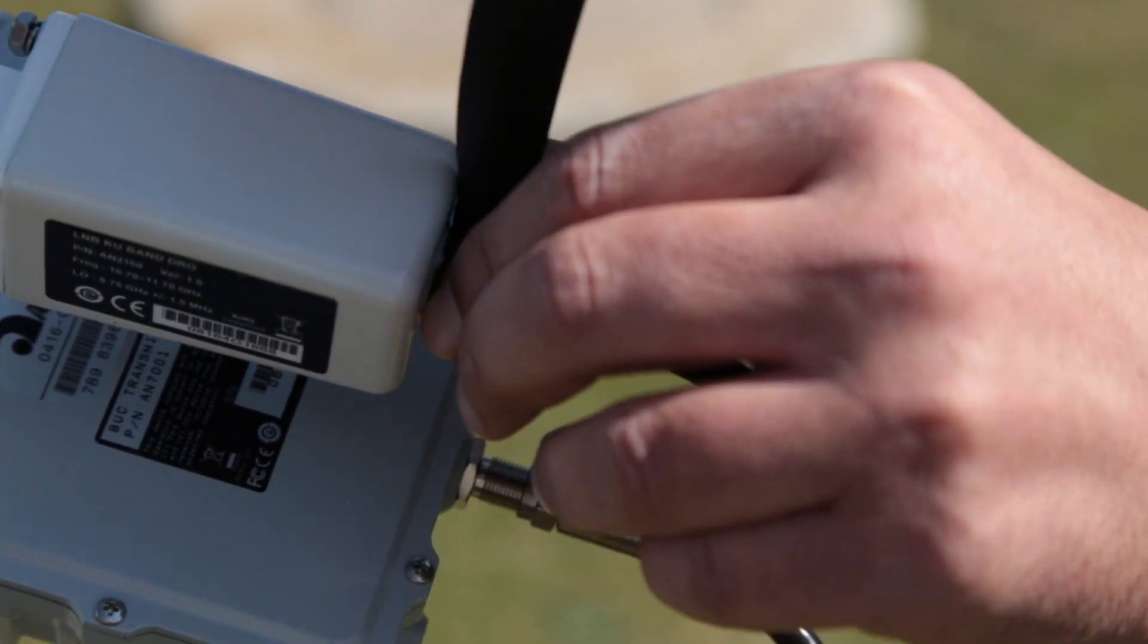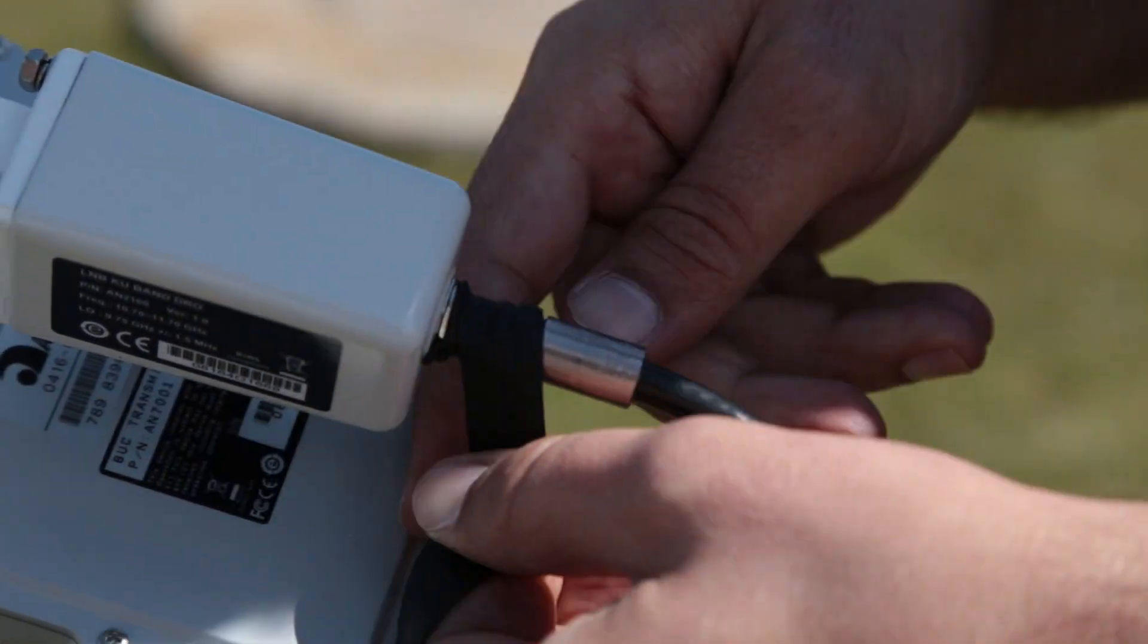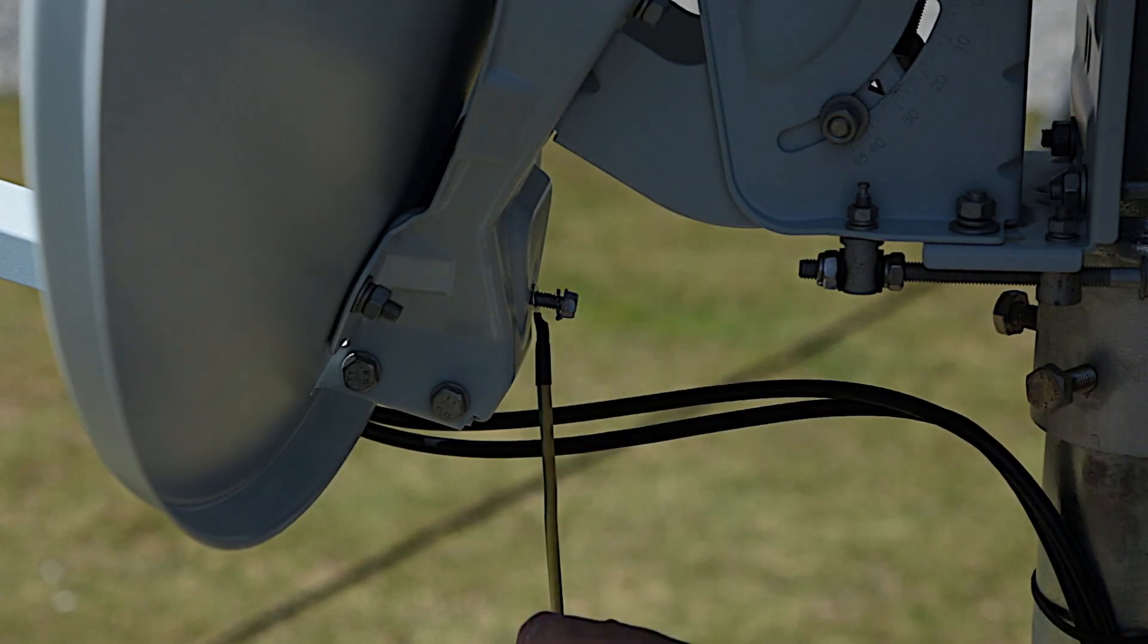Lastly, protect both connectors from moisture and rain by carefully wrapping them in self-bonding tape. If possible, connect one of the building's earth cables to the antenna mast.